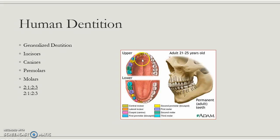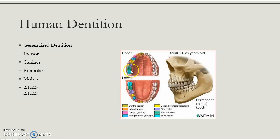We separate the mouth into upper and lower halves, then cut further by dividing down the middle, giving us four quadrants. In every quadrant we have two incisors — a central incisor and a lateral incisor — then one canine, two premolars, and three molars. The third molar is the wisdom tooth. Many people get it removed, some have it impacted, or it never grows — but this is standard dentition for humans, the same on the top and the bottom.